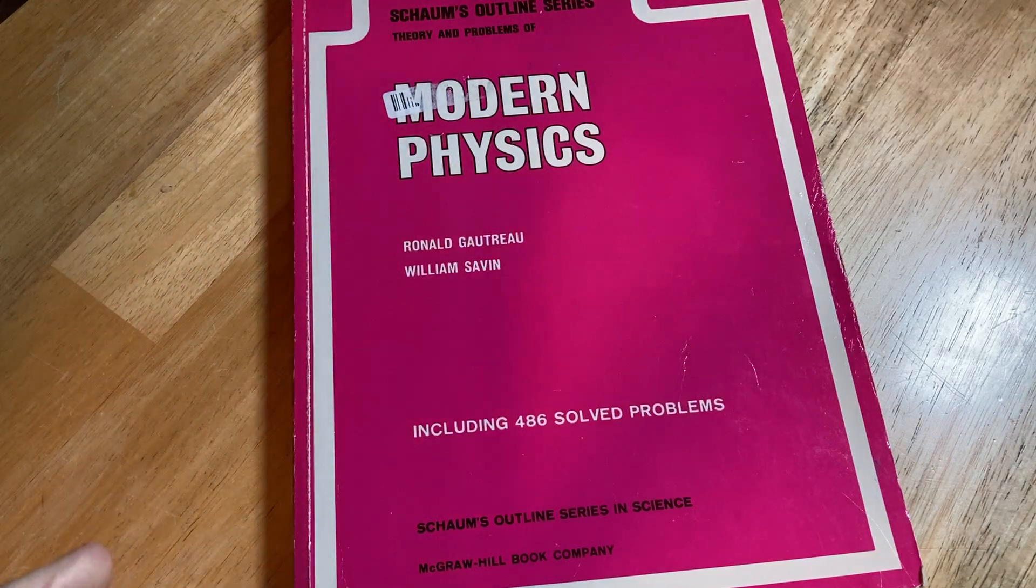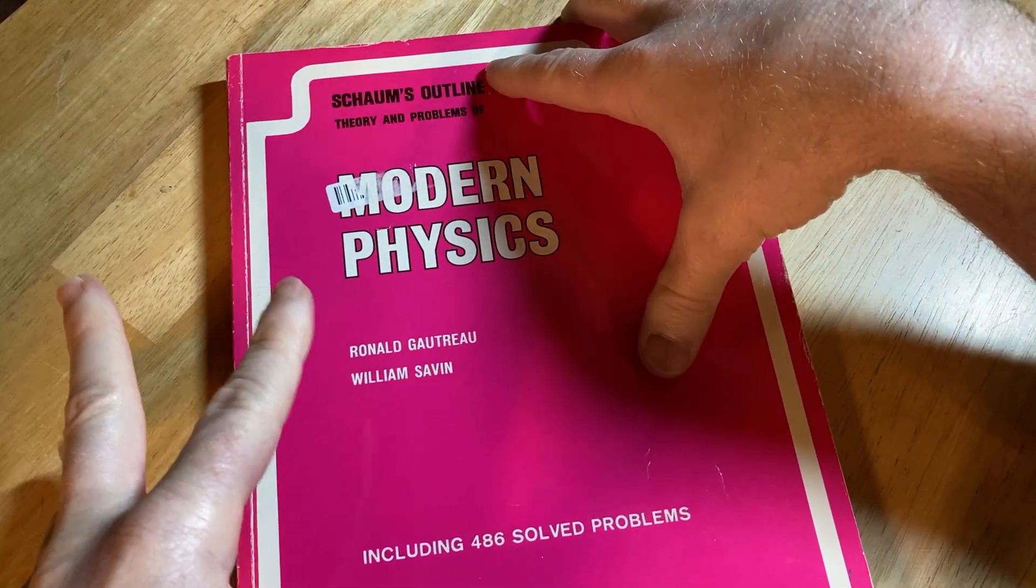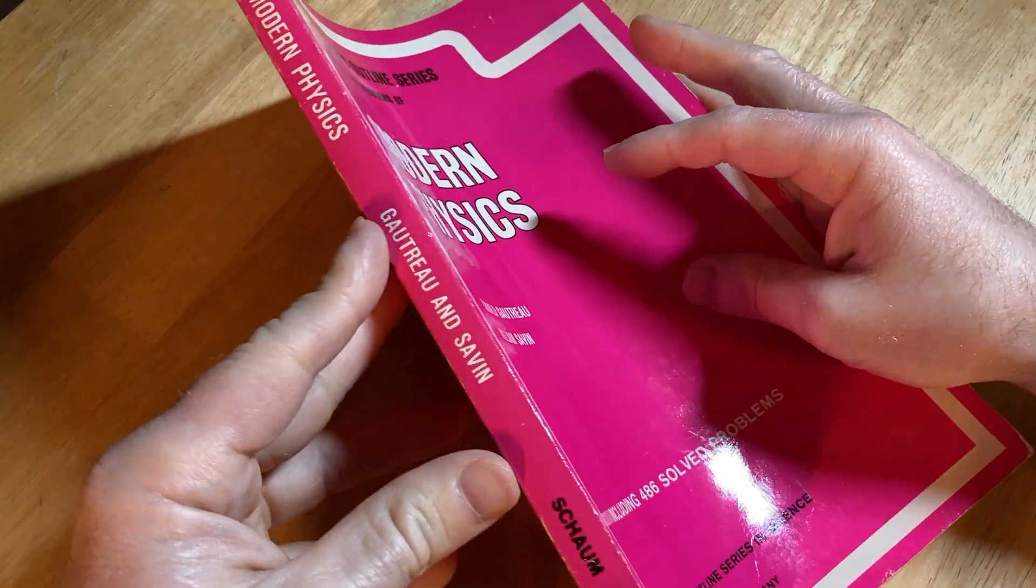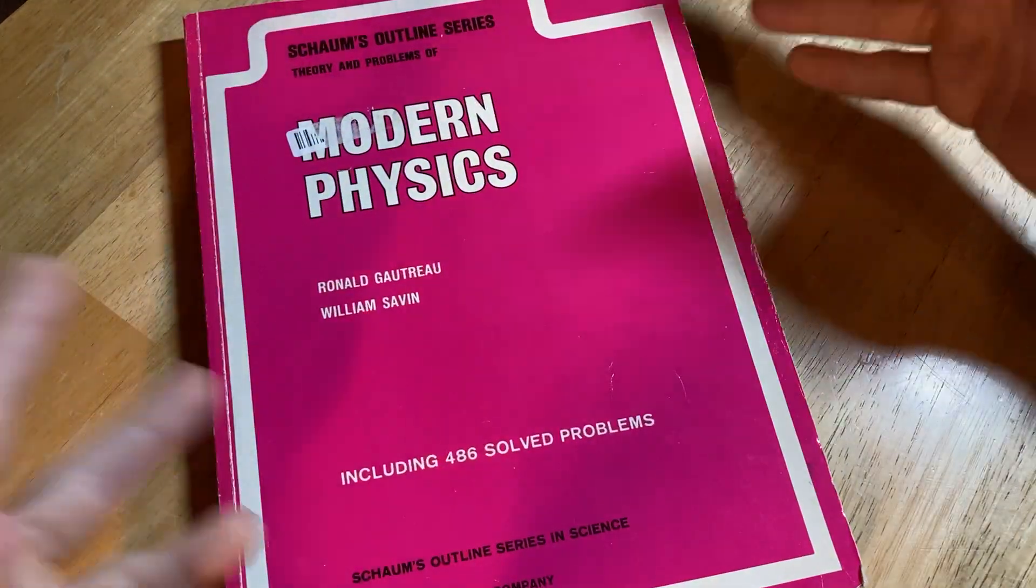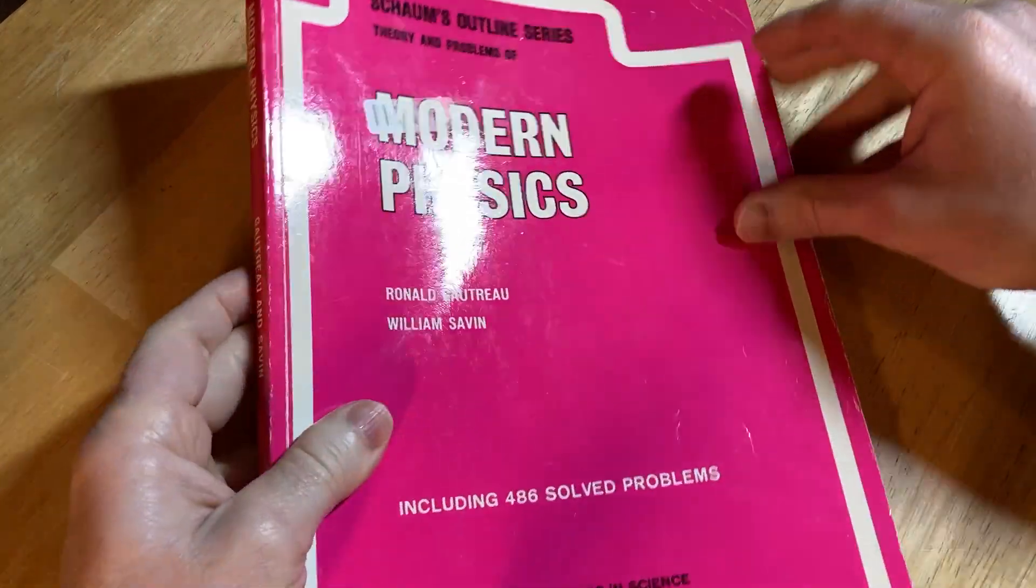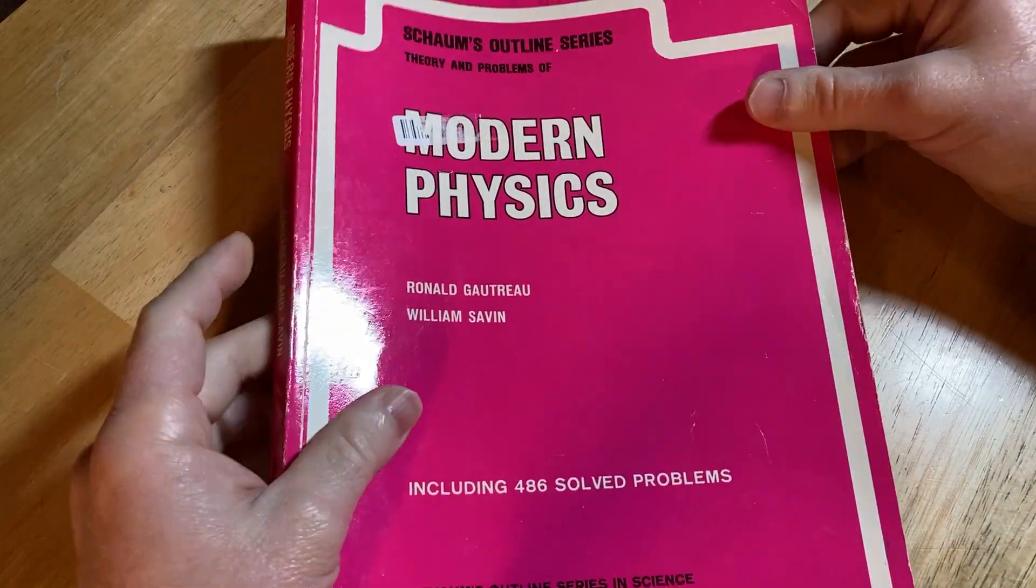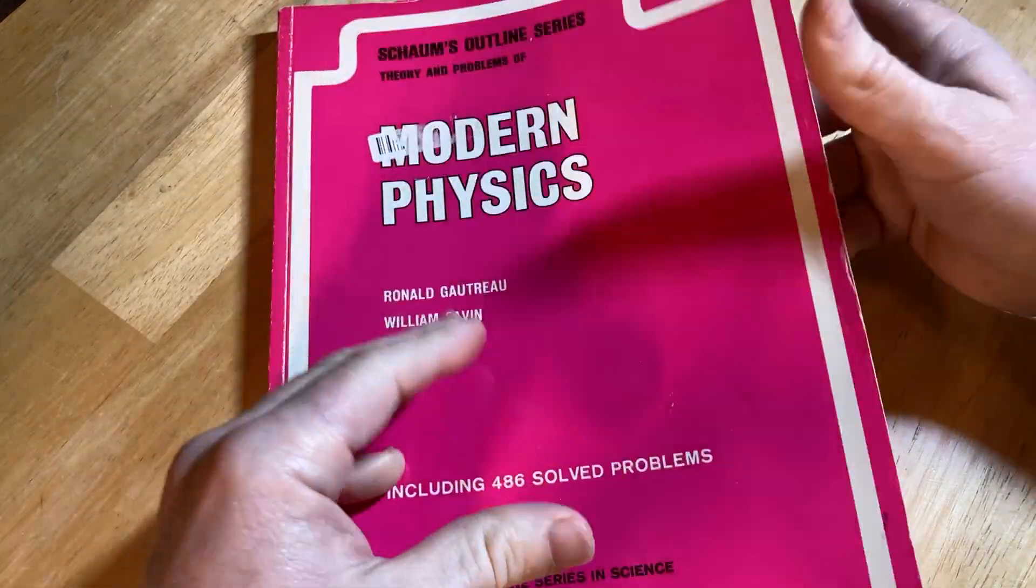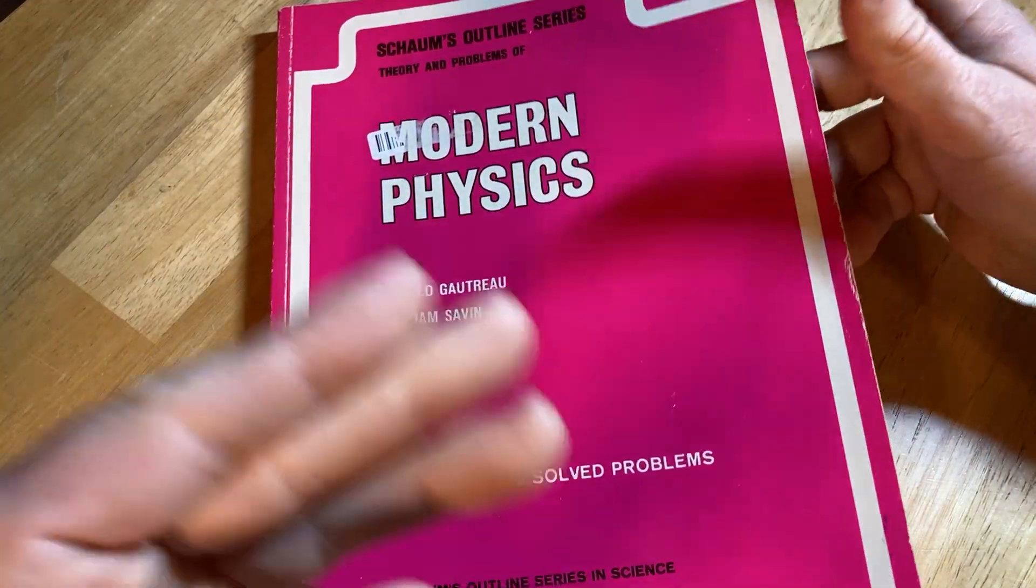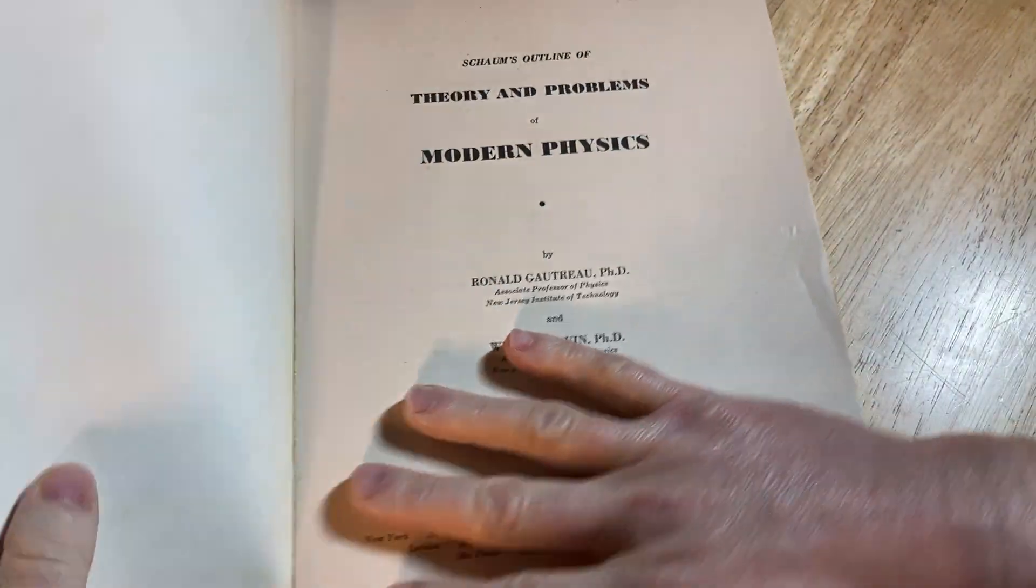Modern physics. This is the Schaum's outline of modern physics. Modern physics is a course that you can take. I actually took a course in college called modern physics, which is maybe not super common. It's like physics three. So you take two physics courses and you take a third one and sometimes it's called modern physics.